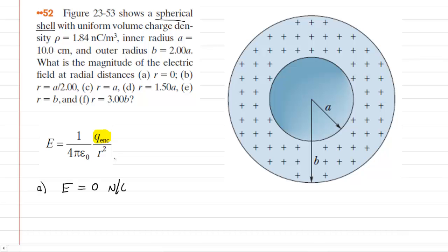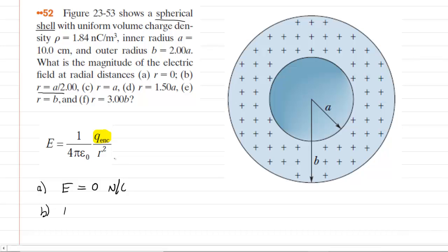Now we move on to part B, where we calculate the electric field at a distance of A divided by 2. That would be enclosed by a Gaussian surface of radius A divided by 2. But look inside that spherical Gaussian surface — there are no positive charges in there, no net charge. Because there's no net charge, the electric field is also going to equal zero at that location.